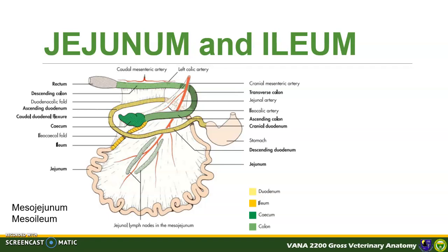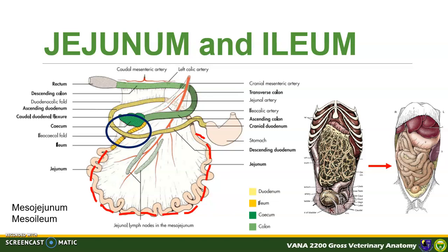The jejunum is the longest and most movable part of the small intestine, while the ileum is the short terminal part. Here is the jejunum and here is the ileum in a schematic drawing of the dog gastrointestinal tract. The jejunum is attached to the body wall by the mesojejunum, while the ileum is attached via the mesoileum; these are often collectively referred to as the great mesentery. In situ, the jejunum occupies almost the entire abdominal cavity. The distinction between the ileum and the jejunum is defined by the proximal extent of the ileocecal folds. The ileum is more muscular and firmer than the jejunum, and it terminates at the ileocolic junction of the large intestine, forming the ileal orifice.